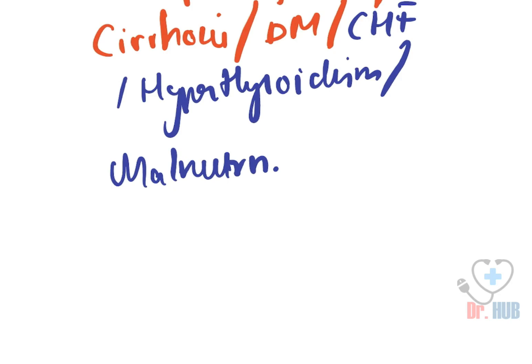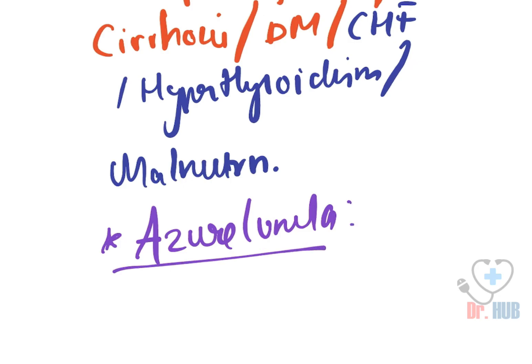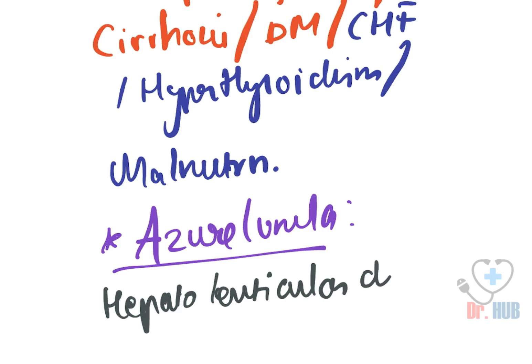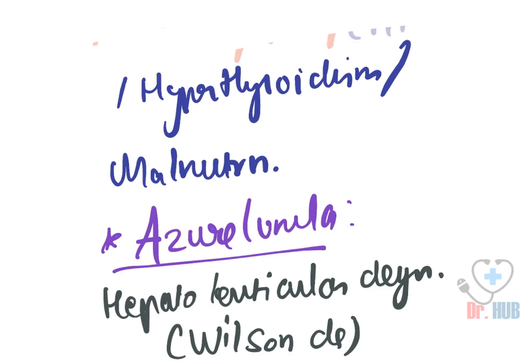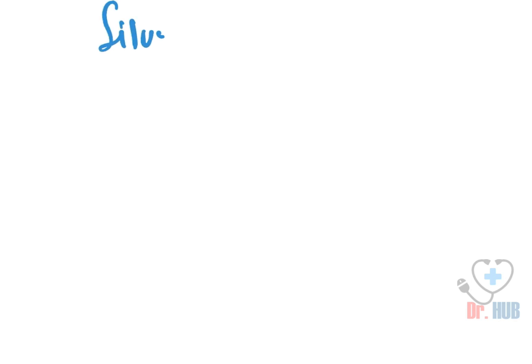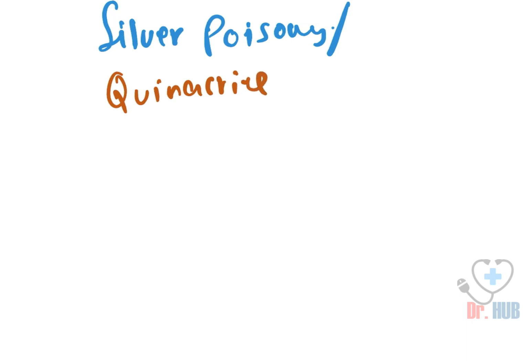The next condition is azure lunula. Azure lunula is seen in cases of hepatolenticular degeneration, that is Wilson's disease, silver poisoning, and quinacrine therapy.